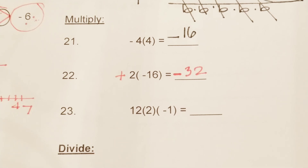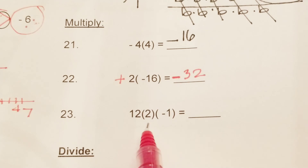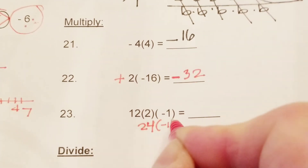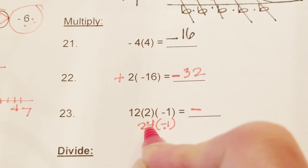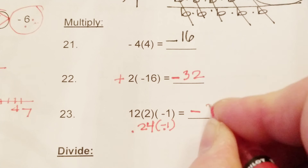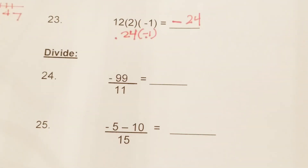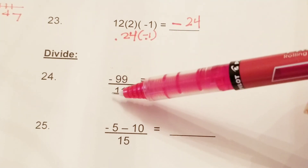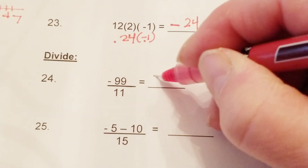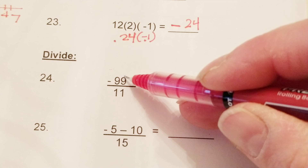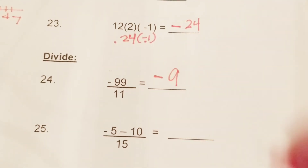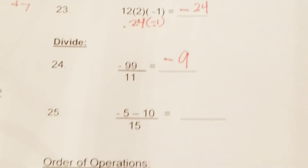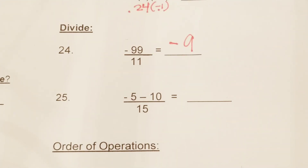12 times 2 is 24 — we're going to move left to right for order of operations. Then times negative 1: a negative times a positive is a negative, and 24 times 1 is 24. Number 24: 99 divided by 11 — when you divide a negative by a positive you get a negative, and 11 goes into 99 nine times, so the answer is negative 9.